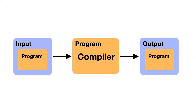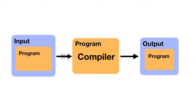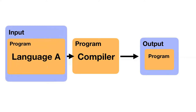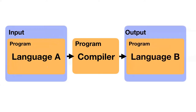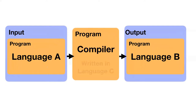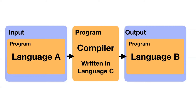If you wrote a compiler that could only take as input one very particular program, that would not be very useful. What we really mean is any program in some language — language A as our input language. And of course we hope our output is in some consistent language as well, so we'll call that language B. There's also another language: the compiler itself is written in a language. So there are really three languages here. This is a very expansive definition of what a compiler is, and I think it's the best definition.